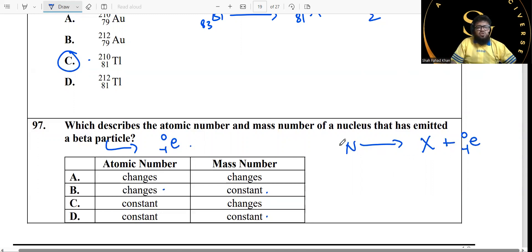Question 97: what describes the atomic and mass number of a nucleus that has emitted a beta particle? Beta means an electron with a zero mass but negative one charge. So you have the atomic number not changing at all because it's zero mass, but the proton number it will increase by one unit, so it will change. So mass number does not change, it stays constant, but atomic number yes it does.